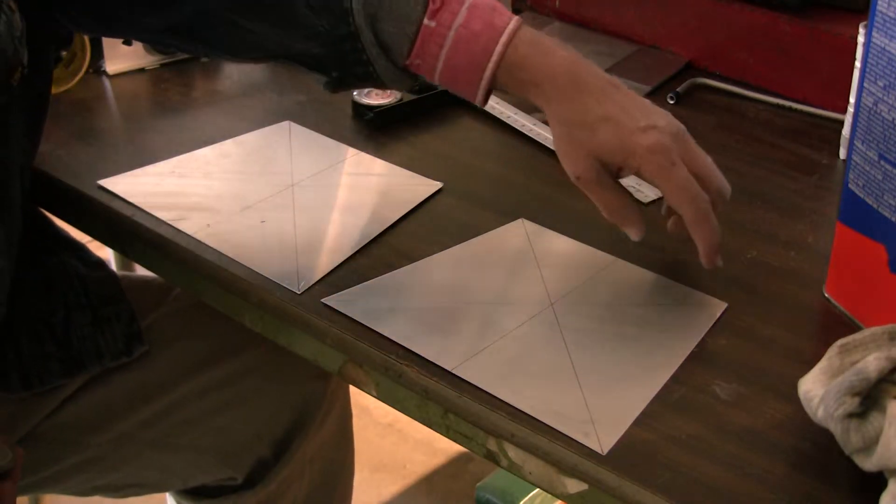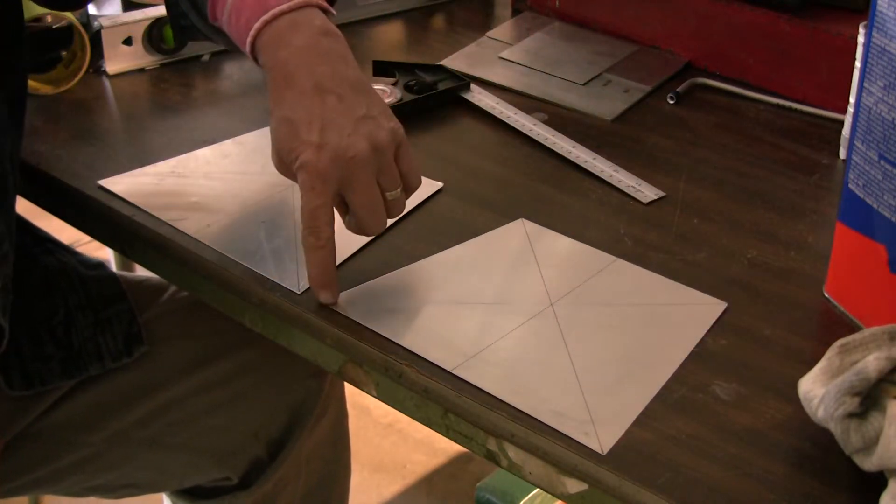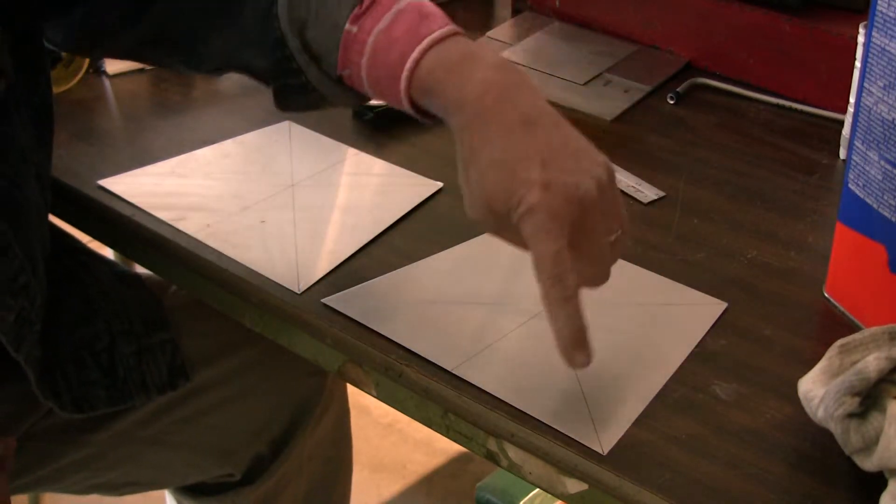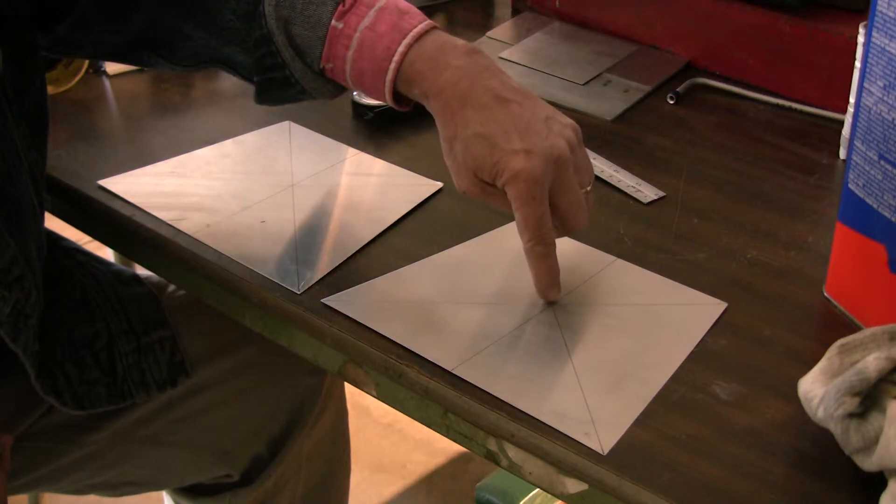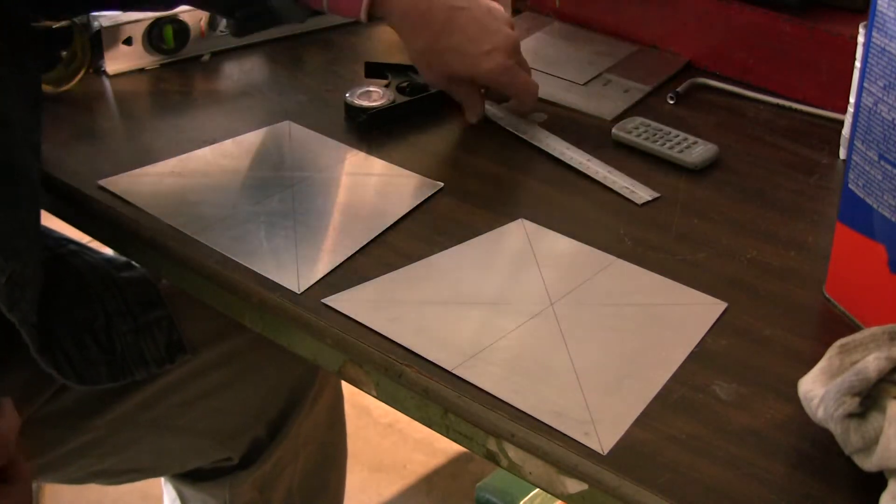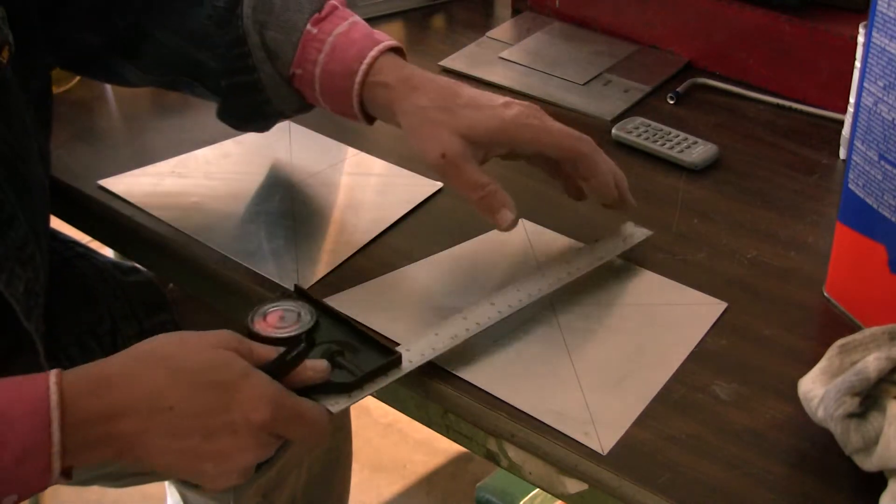What you should do is go from corner to corner and mark a line from corner to corner on one side. Where those two lines intersect, that is your center hole location for the center of this plate.